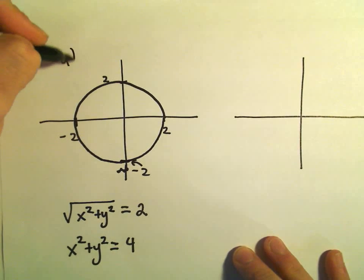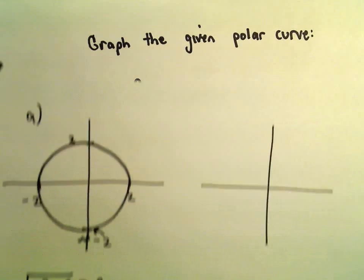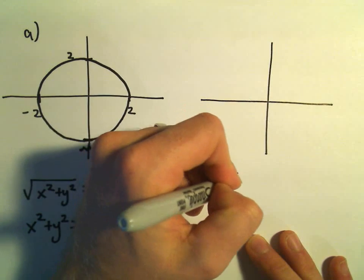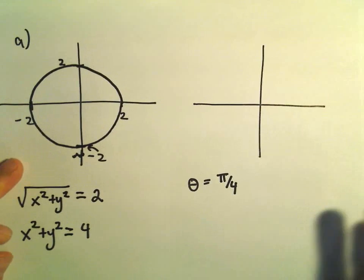So this would be part A. Part B, we've got theta equals pi over 4. So theta equals pi over 4. Again, you can kind of think about this in the same way.